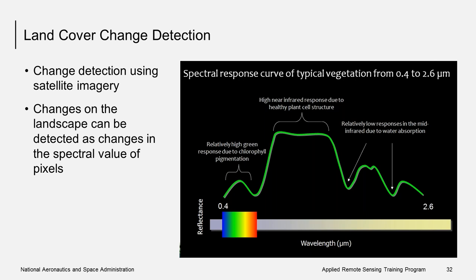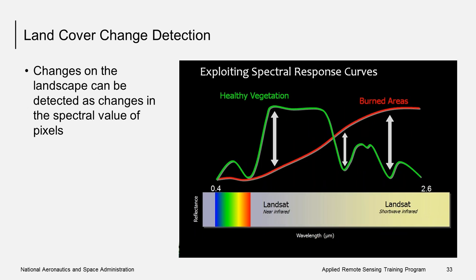Every object on earth has its own spectral response curve. The typical spectral response curve of healthy green vegetation has relatively high response in the green wavelength and very high response in the near-infrared wavelengths. Vegetation change can be detected as changes in the spectral values. For example, a burned forest has low spectral values in the green and near-IR wavelengths and high spectral values in the mid-infrared wavelengths. If you have one image that's pre-fire and one that's post-fire, you can see a distinct difference in pixel values in those areas.